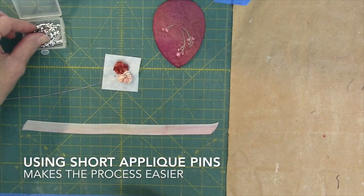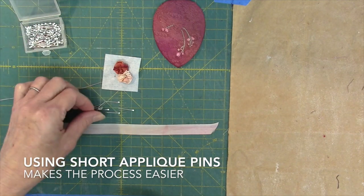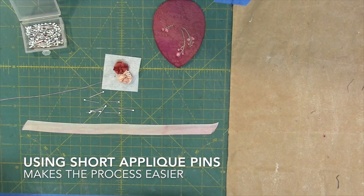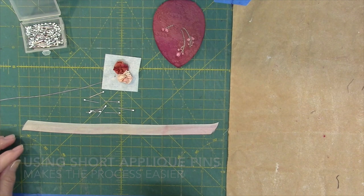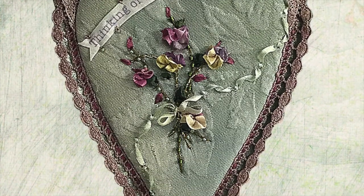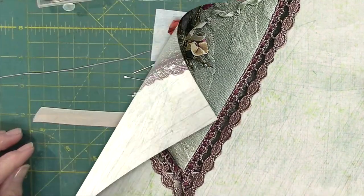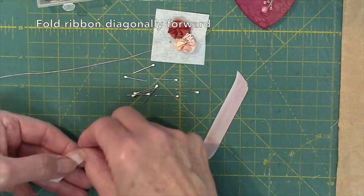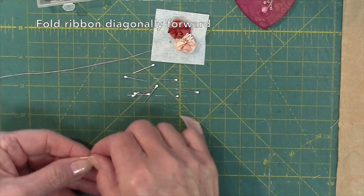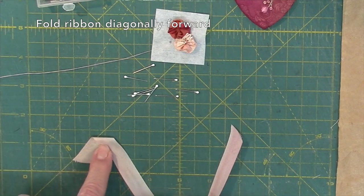Friends of mine helped me realize that by using these very short applique pins, this technique is more easily accomplished. Start by folding the ribbon diagonally forward leaving a little tail of about one inch. This forms what I call the first mountain.